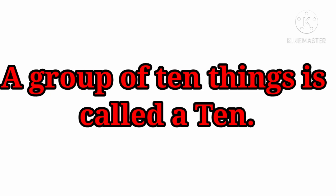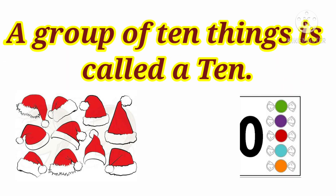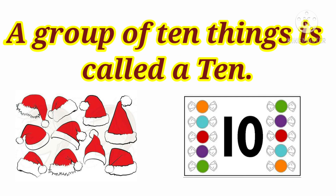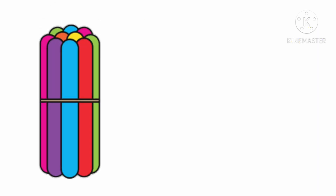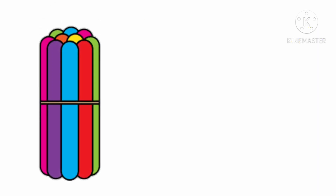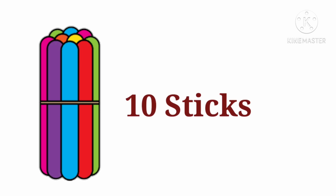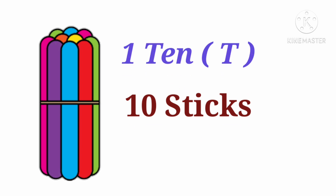A group of 10 things is called a ten. So how many sticks are there in this bundle? Yes, in this one bundle there are 10 sticks. So 10 sticks make one bundle — it becomes one bundle.